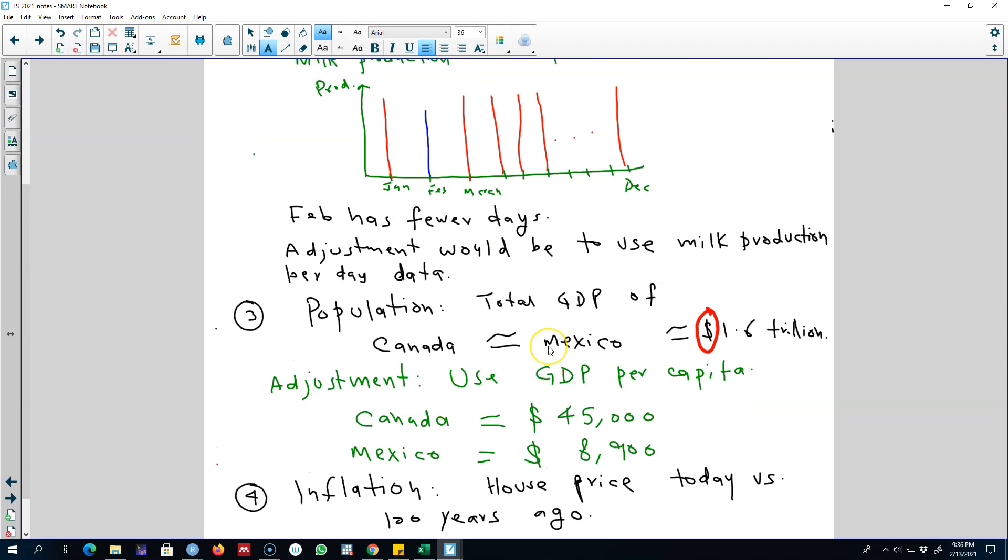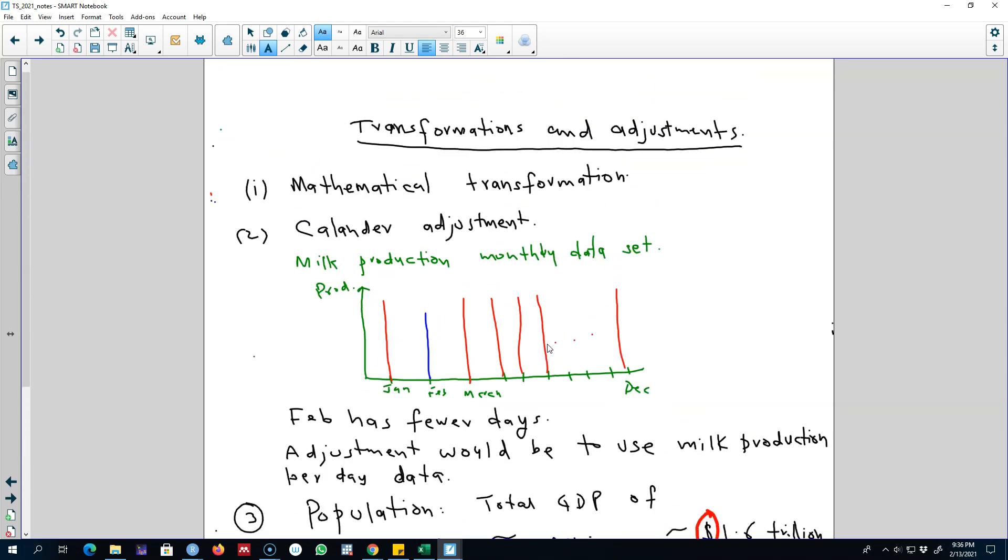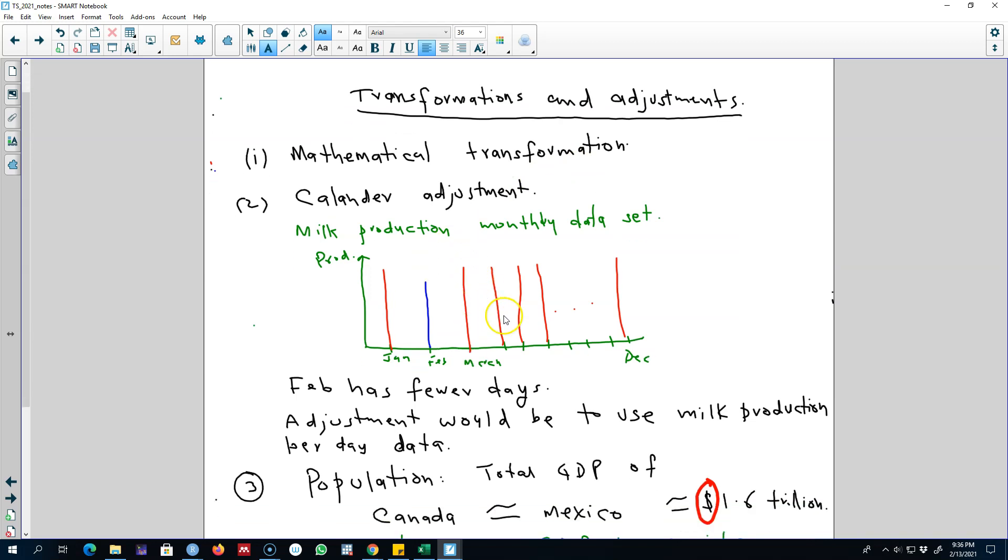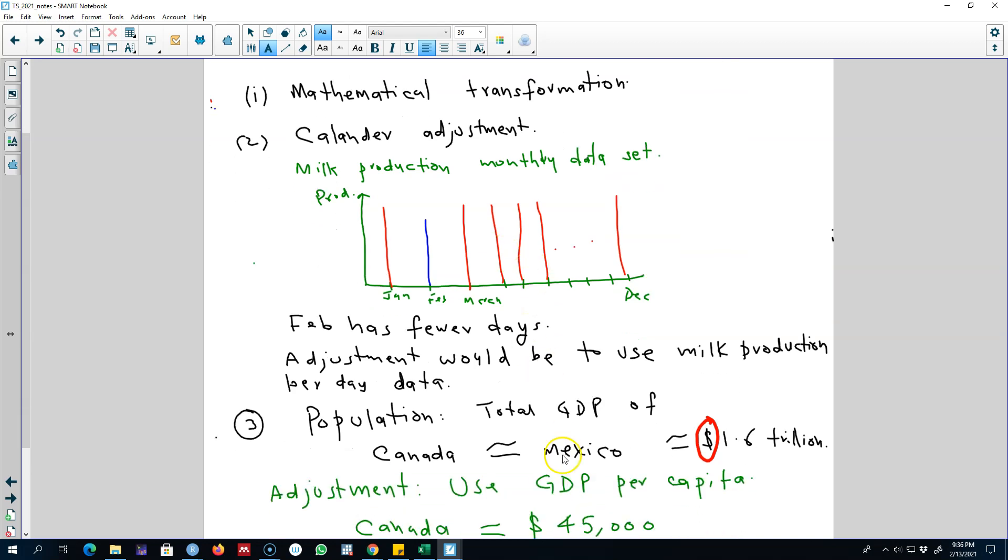So these are some of the adjustments that you have to make in your data set before starting any analysis. In the next video, I'm going to spend a little bit more time talking about mathematical transformation in a data set because it requires a little bit more time to understand. But the idea here is to make our data uniform across various time periods or across various time series so that the comparison is easier.